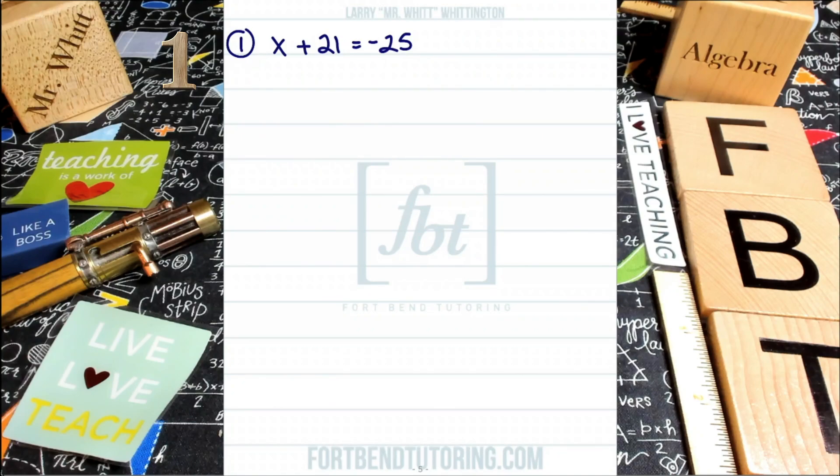Well, we're going to look at both sides of the equation. On the left side of the equation, you have X plus 21. On the right side of the equation, you have the value negative 25. And what you want to do is you want to isolate the variable X. So that's what we're attempting to do. Notice that when I've highlighted that variable X, what remains on the left side is that positive 21.